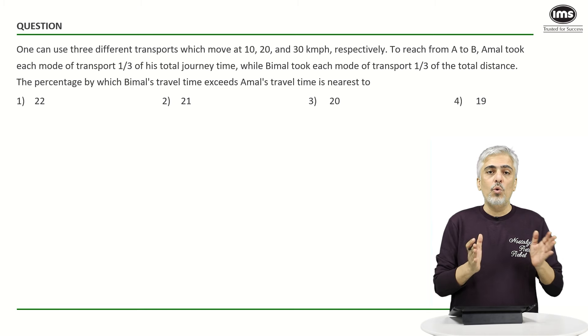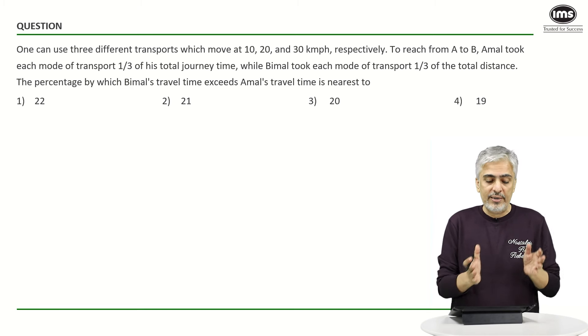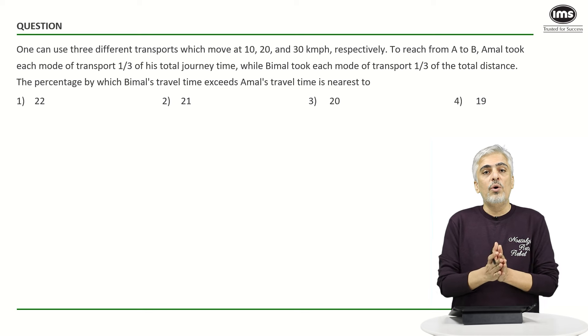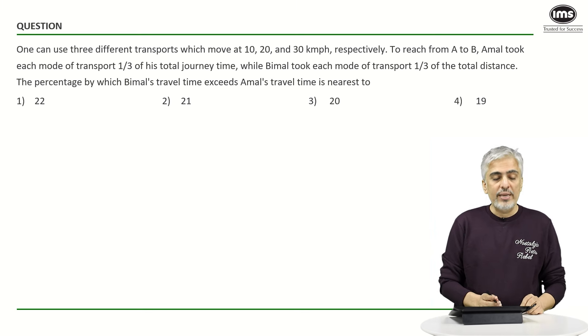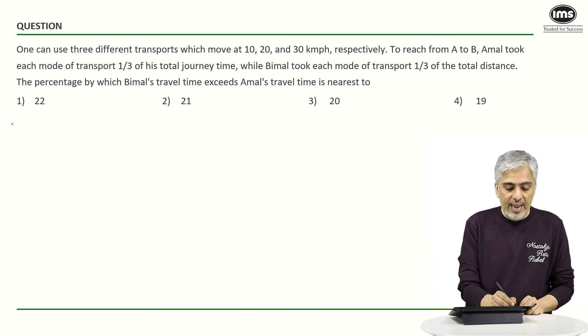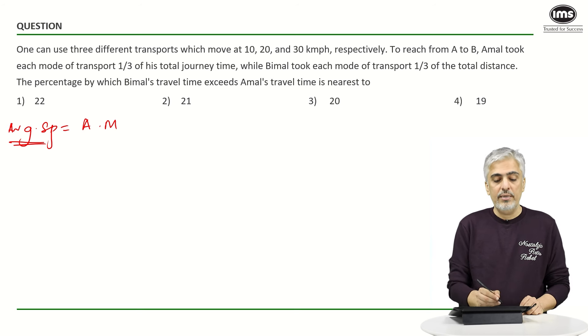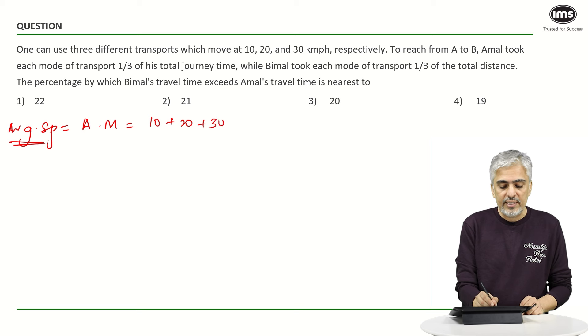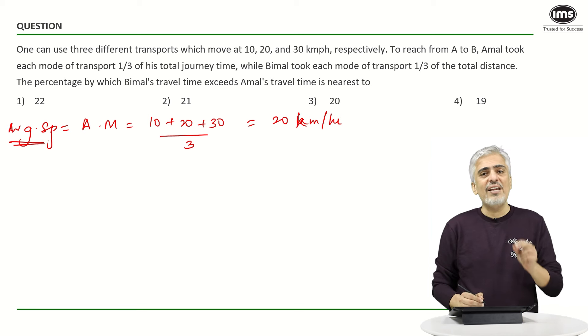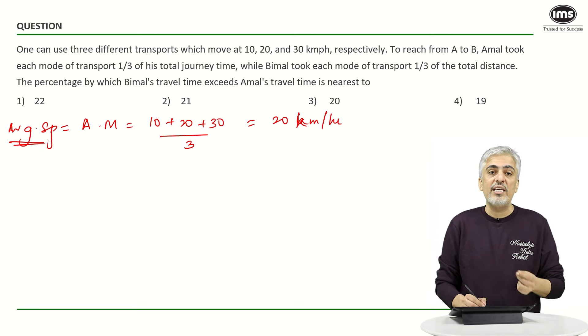In case 1, the 3 speeds were travelled for the same amount of time. So in case when time is constant, average speed is nothing but the arithmetic mean. And hence it will be nothing but 10 plus 20 plus 30 divided by 3 which becomes 20 kilometers per hour. Understand knowing this saved you some time in the exam of thinking what time to take for each one of them and writing it down and all that. So you save some time.